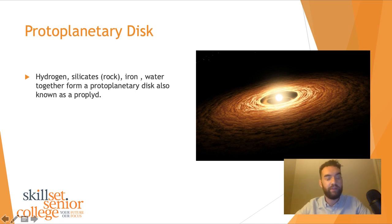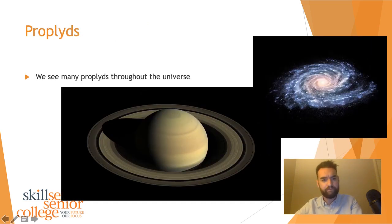We see many proplids throughout the universe. Our own galaxy, the Milky Way, is that flat spinning disk. Even the rings around Saturn have that flat disk shape. These should be familiar to us, but we've probably just not known the term proplid before.